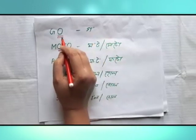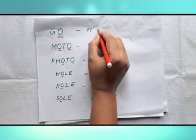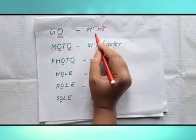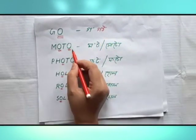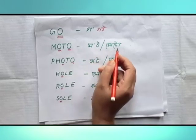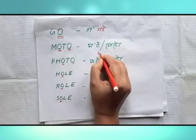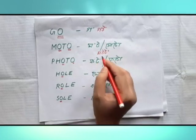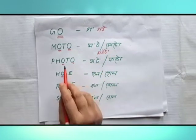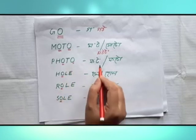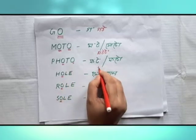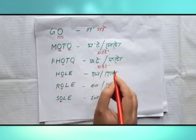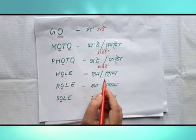I will call it G-O, go. M-O-T-O, motor. P-H-O-T-O, photo. H-O-L-E, hole.